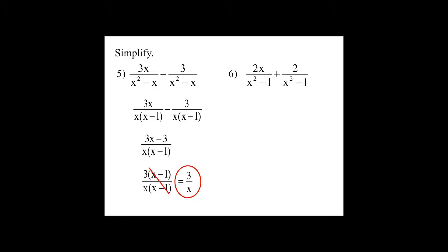Factor your denominators for number 6. Combine your numerators. GCF the numerator. And then divide out your common factors. And you're left with 2 over x minus 1.